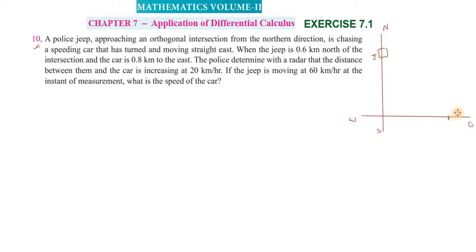The jeep is chasing a speeding car that has turned and is moving straight east. When the jeep is 0.6 kilometer north of the intersection and the car is 0.8 kilometer to the east, the police determine with radar that the distance between them and the car is increasing at 20 kilometer per hour.